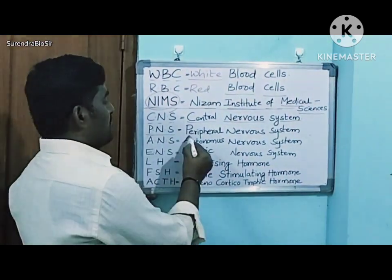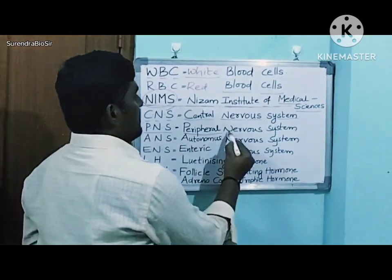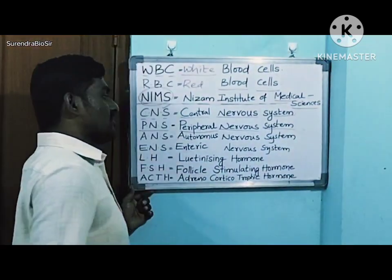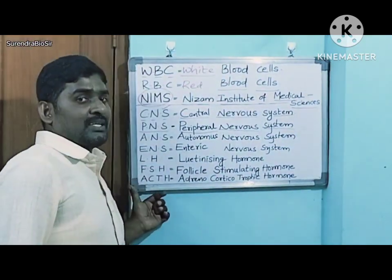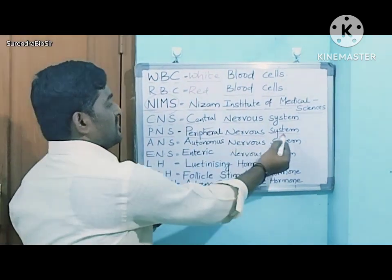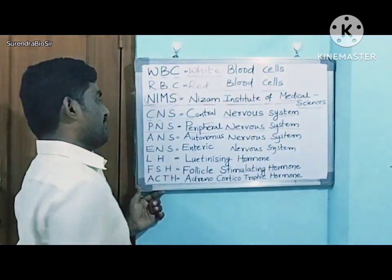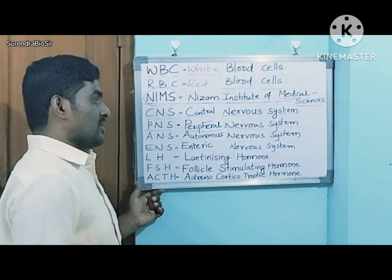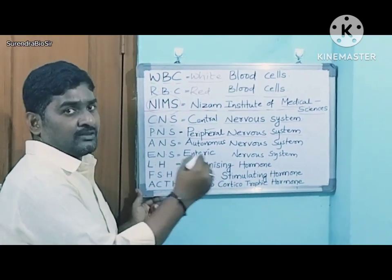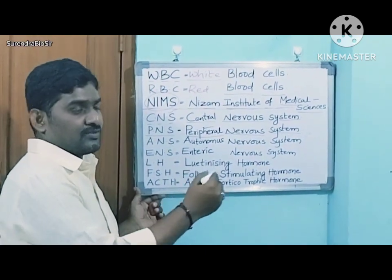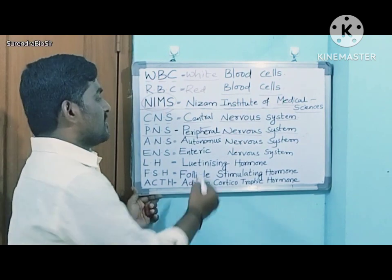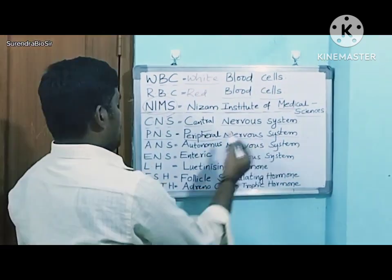Next: PNS — Peripheral Nervous System. Other than the brain and spinal cord, the remaining nerves are called the Peripheral Nervous System.